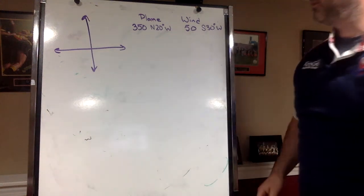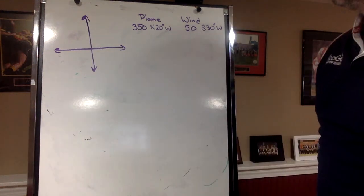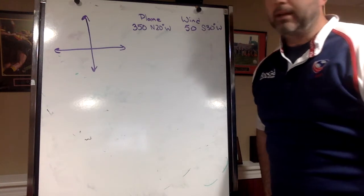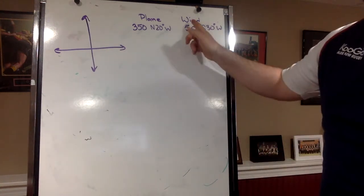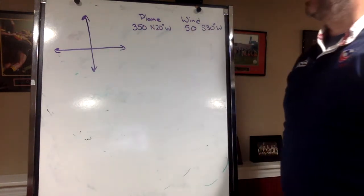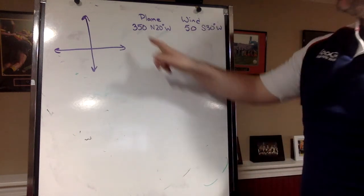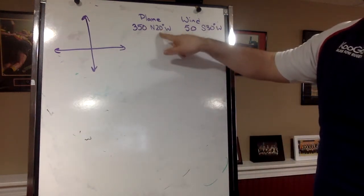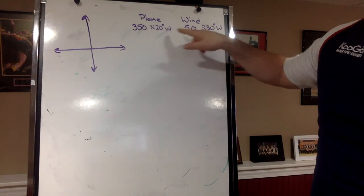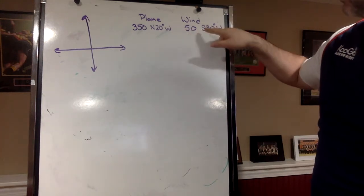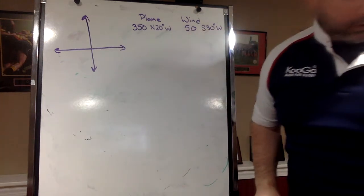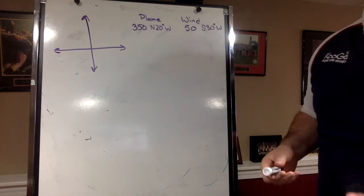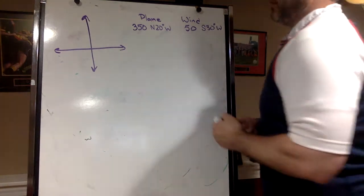Today we're going to continue with finding speed and direction using vectors, but now we're going to have wind acting on a plane. We have an airplane flying at 350 miles per hour with a bearing of north 20 degrees west, and we've got wind at 50 miles an hour with a bearing of south 30 degrees west. So we want to draw a picture - it's going to be rough, not perfect.